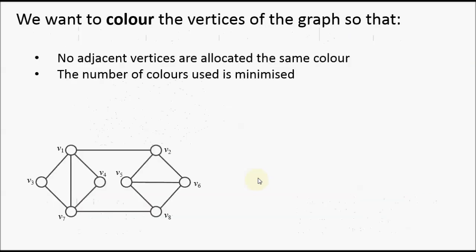In an earlier talk, we saw that the graph colouring problem is an NP-complete problem, so we need to turn towards heuristics and approximation algorithms. Let's remind ourselves of what we're seeking to achieve. We're given a graph made up of vertices, which are the circles, and lines between them, which are the edges. These can be drawn in any formation, so this is essentially an arbitrary graph. We're looking to colour the vertices so that vertices joined by an edge are given different colours, and the number of colours used is minimised.